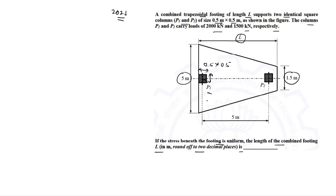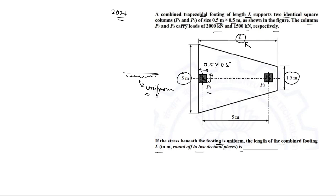The condition here is that the contact pressure — the stress beneath this footing — is uniform. Corresponding to that condition, we have to find the value of L, the length of the footing. Trapezoidal footing is specifically used to make this contact pressure uniform.